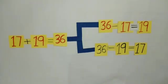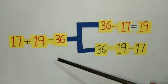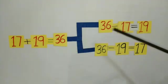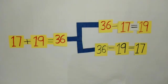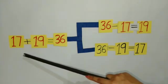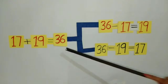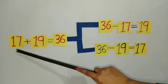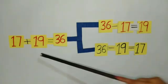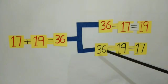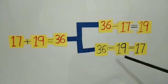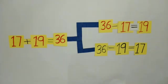Students, we know that we can get two facts of subtraction from one fact of addition. When we add 17 and 19, we get 36. When we subtract 17 from 36, we get 19. Similarly, when 19 is subtracted from 36, we get 17. Today we will do sums of relation between addition and subtraction by using fact of subtraction as base.